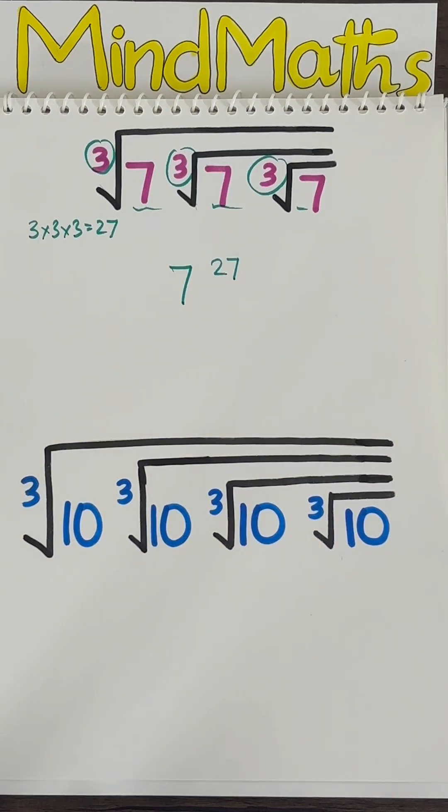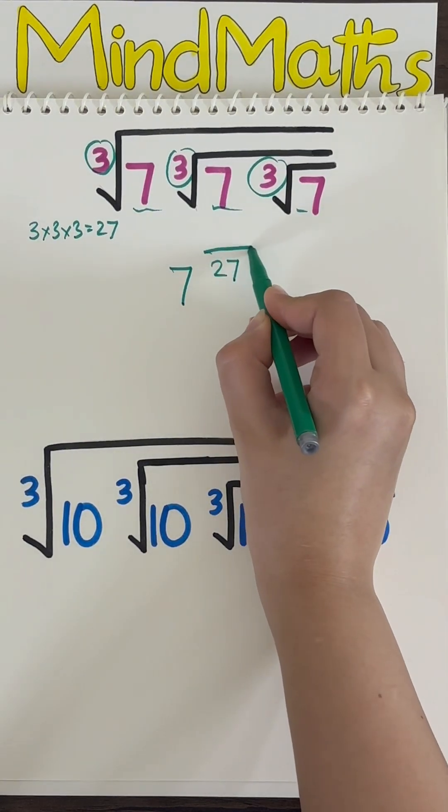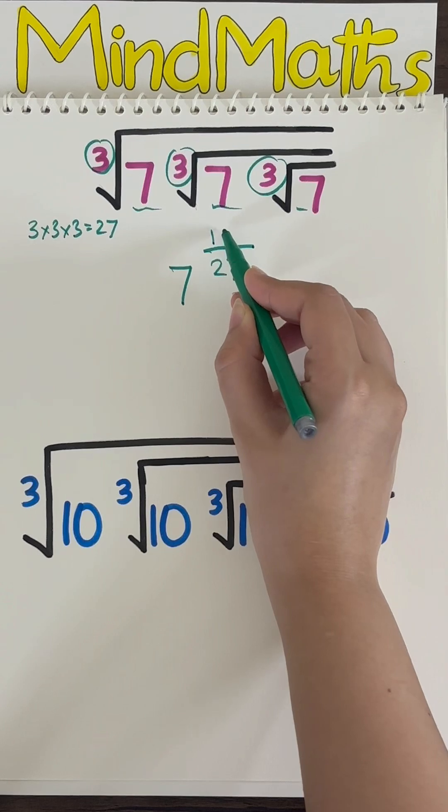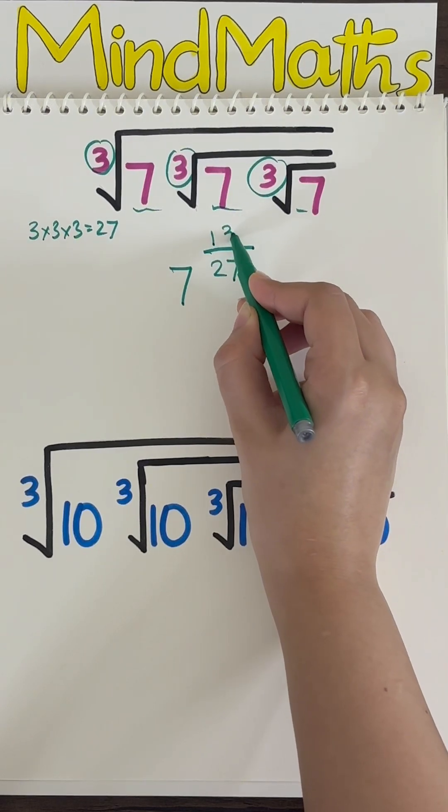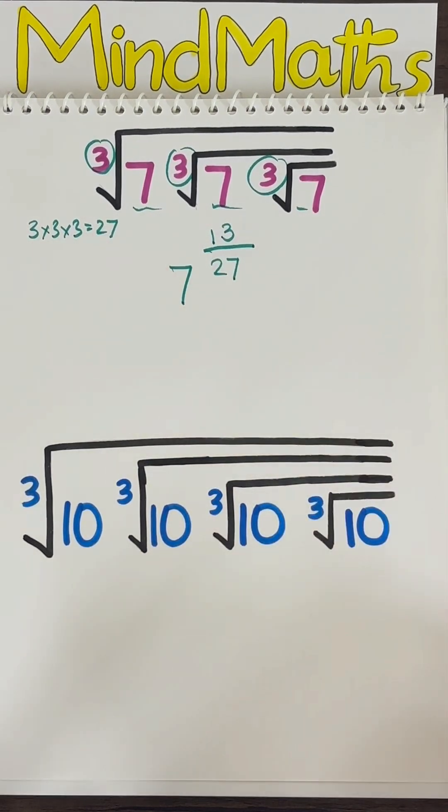Your index is 3, so what number is smaller than 3? It's 2, so divide your exponents, that's 27 by 2. 2 1s are 2, 2 3s are 6. And forget the point. Here is your answer, which is 7 raised to the power of 13 by 27.